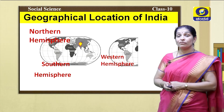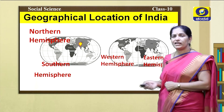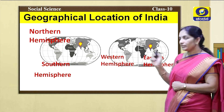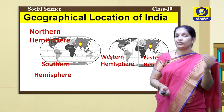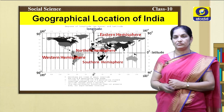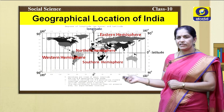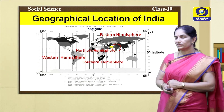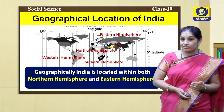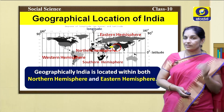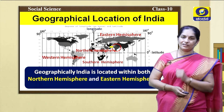This is the western hemisphere and this is the eastern hemisphere. Where is India? India is here. Now, you can tell me what is the geographical location of India. Children, observe this map. This is India. Geographically, India is located within both the northern hemisphere and the eastern hemisphere.